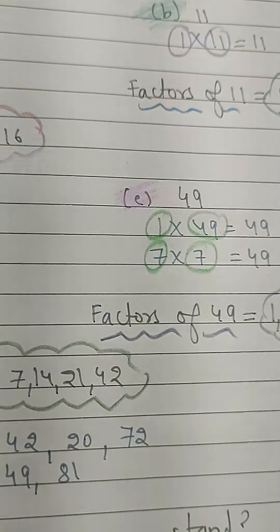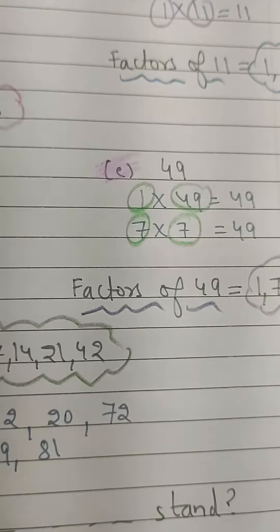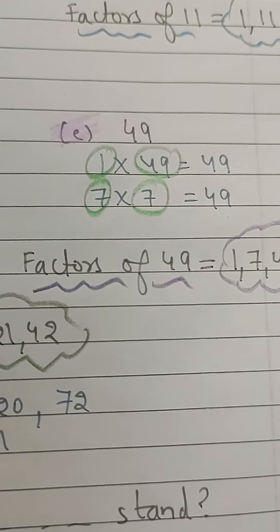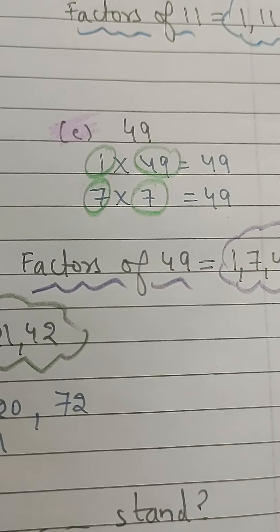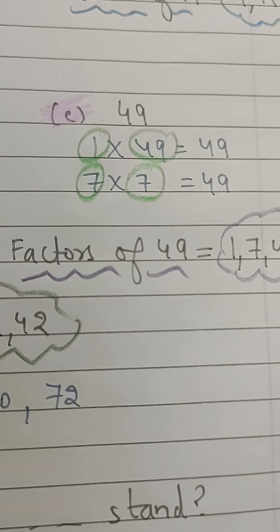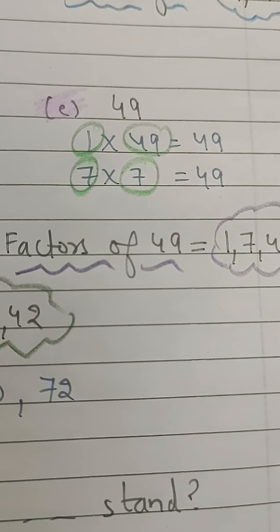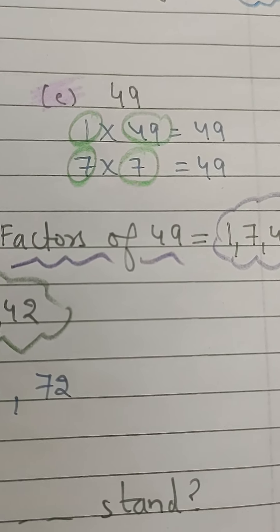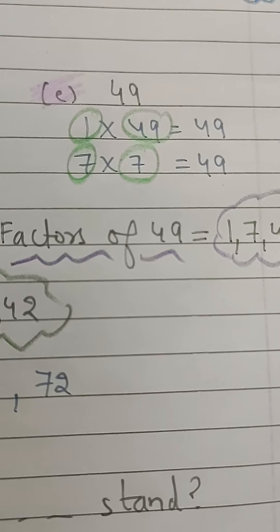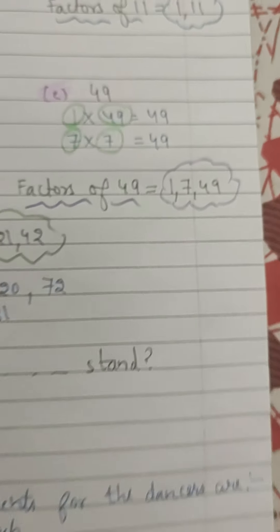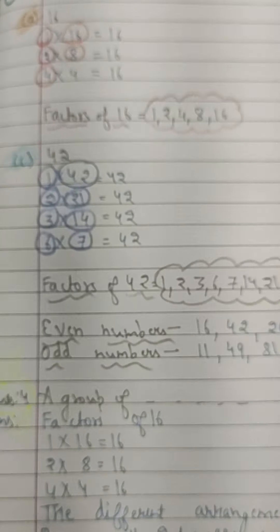Now for 49. 49 comes in the 1 table as 1 multiplied by 49, and also 7 into 7. Check any other number — 49 does not come in any other table. So the factors of 49 are 1, 7, and 49. Only 3 factors.